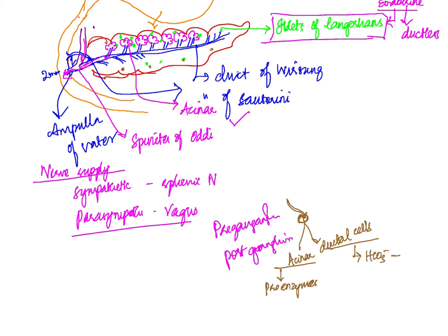The ductal cells are mainly involved in the synthesis of bicarbonate. This bicarbonate is responsible for the alkalinity of the pancreatic secretion, which helps in neutralizing the acid produced from the gastric secretion.